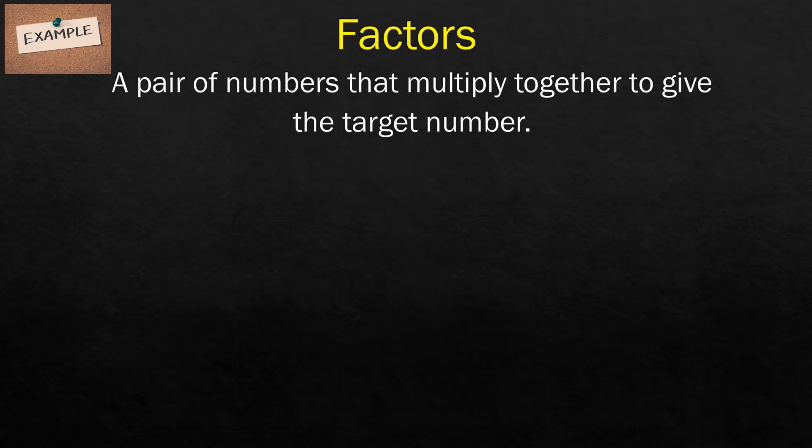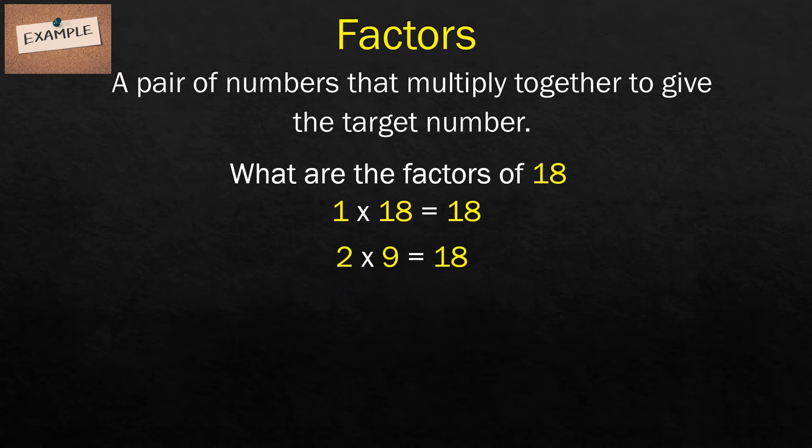Factors is a pair of numbers that multiply together to give the target number. What are the factors of 18? 1 times 18 is equal to 18. 2 times 9 is equal to 18. 3 times 6 is also equal to 18.